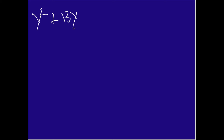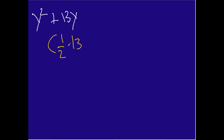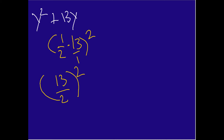This time we're going to have y squared plus 13y. Remember, we have our x squared term and our bx term. We're trying to find the c term — right now the c term is zero — and we're trying to figure out what constant we can use to complete the square. We follow the same steps: take our coefficient 13, do one half times 13 and then square that. So we get 13 over 2, and then squaring that gives us 169 over 4.